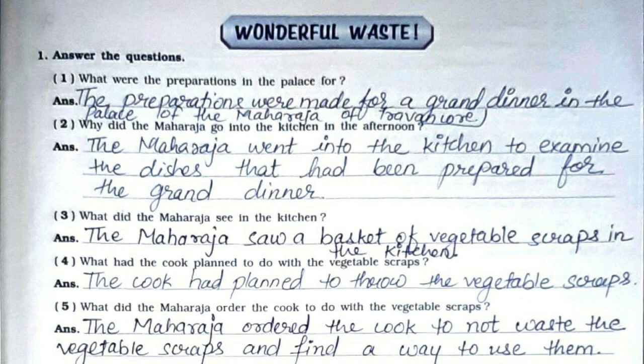Now we'll see the question answers for Wonderful Waste. First one: what were the preparations in the palace for? The preparations were made for a grand dinner in the palace of the Maharaja of Travancore. Second: why did the Maharaja go into the kitchen in the afternoon? The Maharaja went into the kitchen to examine the dishes that had been prepared for the grand dinner.